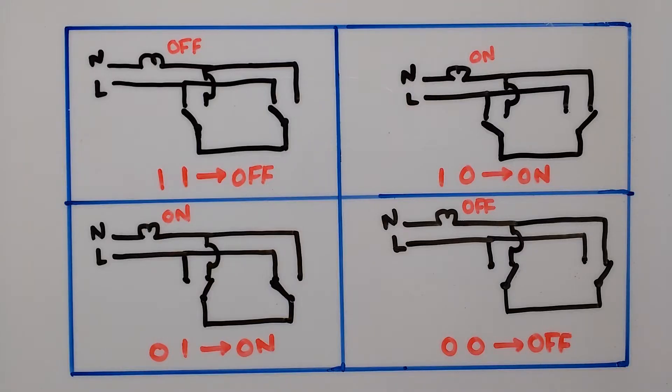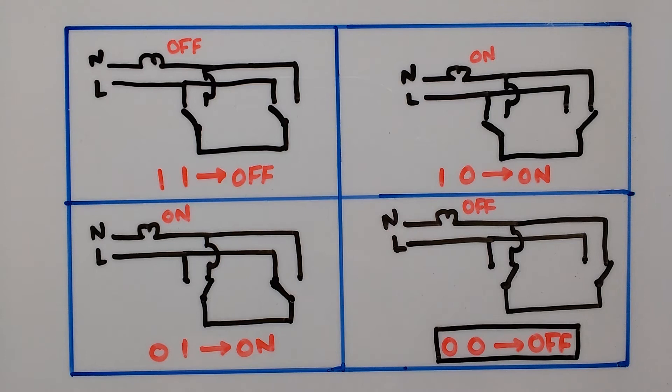In such a scenario we get following results. Combination of 00 and 11 result in bulb turned off.